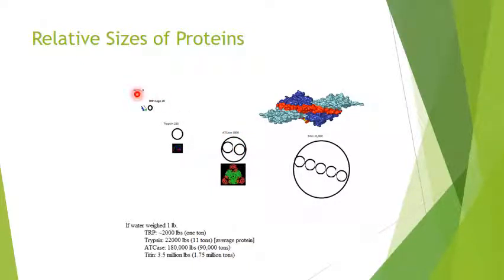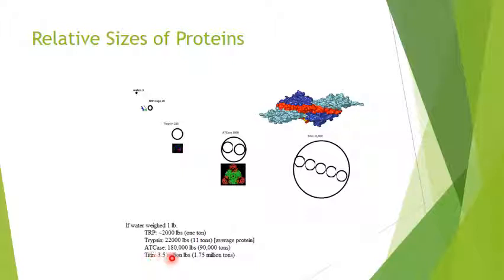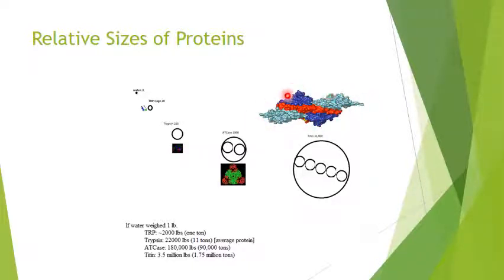The largest protein our body makes is called titin — an appropriate name. If water weighed one pound, titin would be 3.5 million pounds, or 1.75 million tons. That gives you an idea of how big these molecules are. And look how structured they are — it's amazing that something this huge with all these amino acids could have any structure at all.